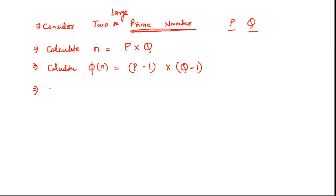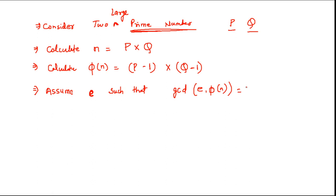After those two calculations, the next step is to choose a public key value E — the key which will be used for encryption. There is a condition when choosing this value: the GCD of E and phi(N) must equal 1. You cannot choose just anything as E. Whenever you choose E, keep in mind that GCD(E, phi(N)) must always equal 1.